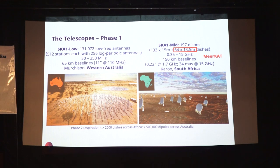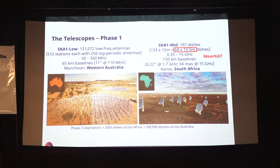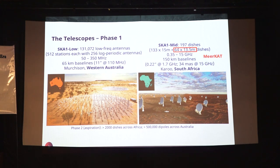SKA-1-Low is a dipole array, different from a typical dish array like GMRT. Each dipole tile, as discussed in yesterday's talk by Prabhu, consists of 256 dipoles forming one tile with one primary beam — they are phased up so each tile is equivalent to one dish. There will be 512 stations, each with 256 log-periodic dipole antennas. The frequency coverage will be from 50 to 350 MHz, so dark ages won't be covered by this telescope.